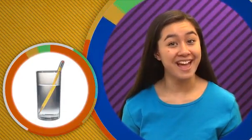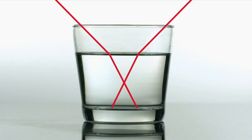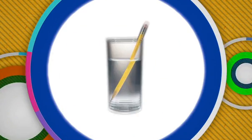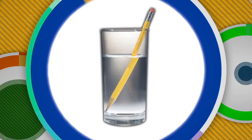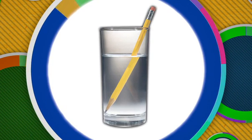But did the pencil really bend? Well, no. It appears that way when it is partially submerged in the water. Why? As light passes from the air to water, it experiences a change in speed and the light bends. The same happens as the light goes back into the air. So the light rays, not the pencil, are actually bending, and that changes our perception — how we see the pencil.